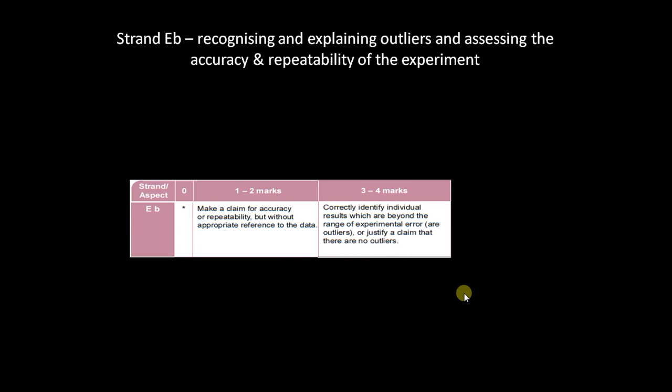Okay, let's move on to strand EB this time, and EB is about explaining your outliers, recognizing your outliers, explaining them, and then going on to assess the accuracy and repeatability of your experiment. Now all your outliers in the results table should be highlighted, and just highlighting them and simply saying nothing else isn't acceptable.